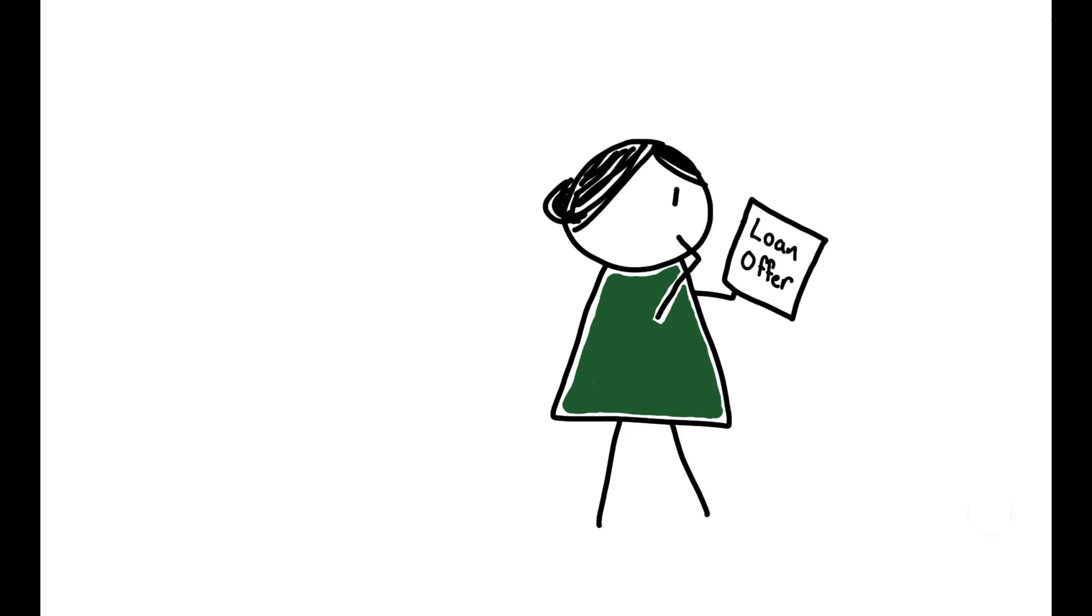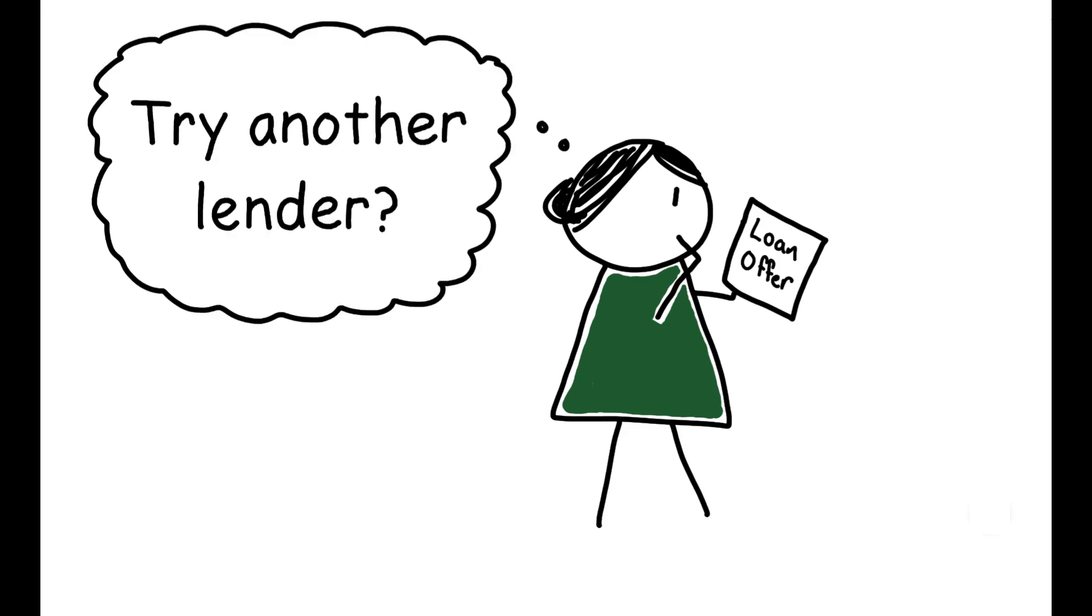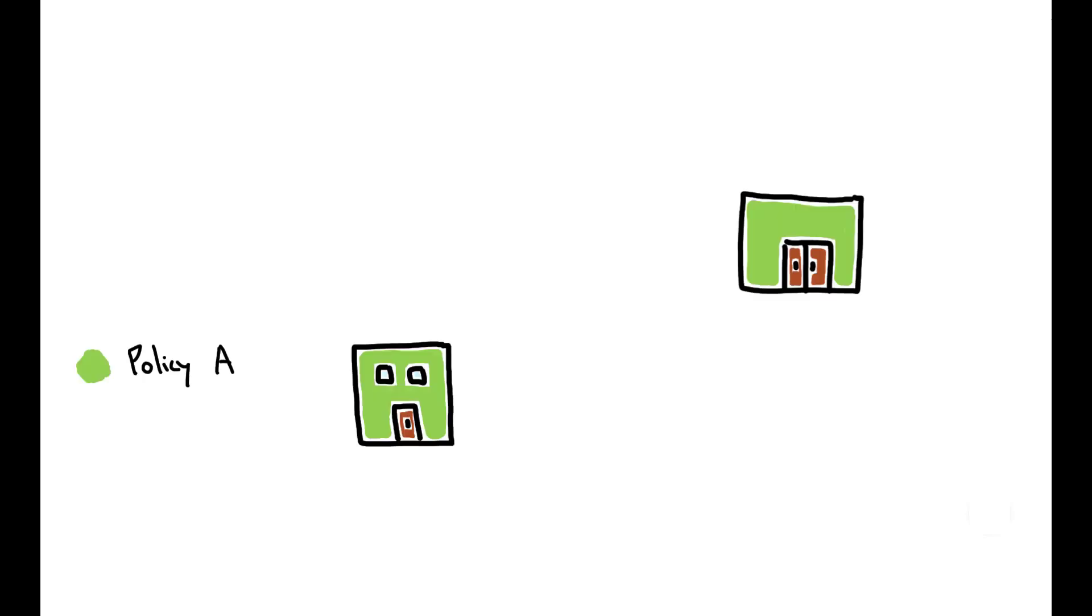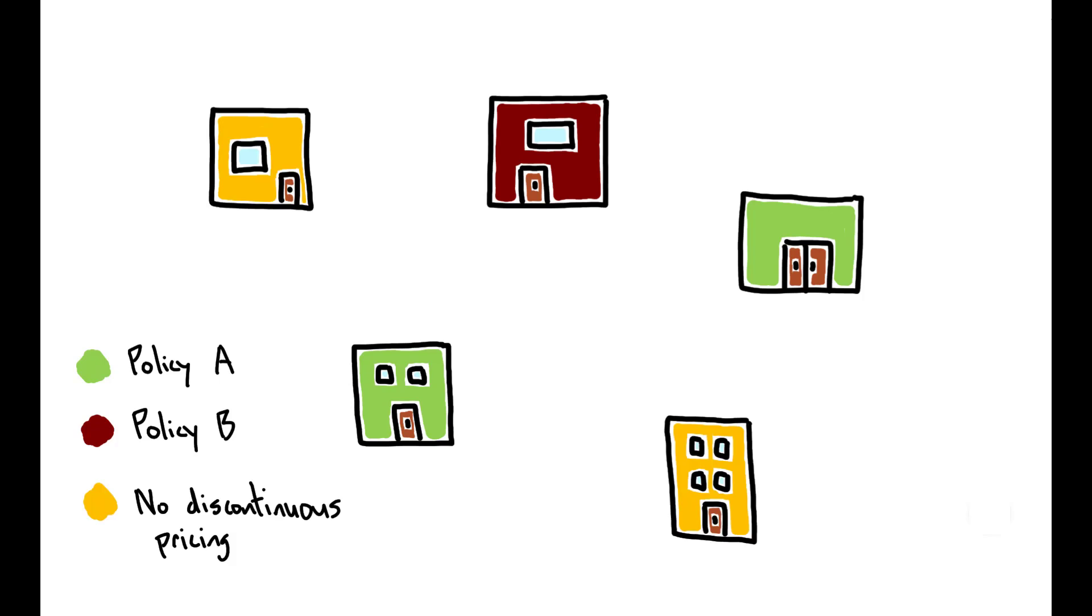Now in the context of this paper, these discontinuities are useful because they provide quasi-random variation in the potential benefits of searching for another loan. Not all lenders use the same pricing policies or even have discontinuous pricing rules at all, and this implies that a borrower who lies just to the left of a discontinuity at one lender can potentially receive a better interest rate if she simply searches for another loan in her local market.